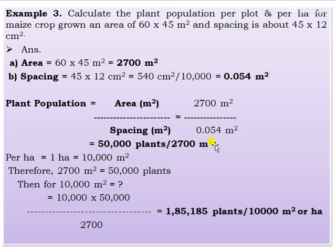That is 50,000 plants per plot. For per hectare: 1 hectare = 10,000 m². Cross-multiply: 10,000 × 50,000 ÷ 2,700 = 1,85,185 plants per hectare. This is the detailed calculation for plant population of mash crop.